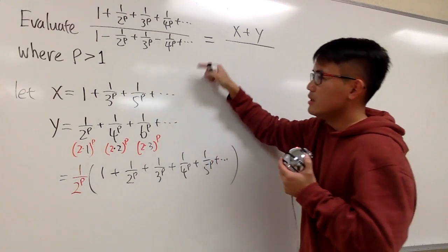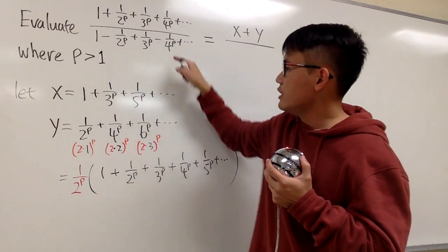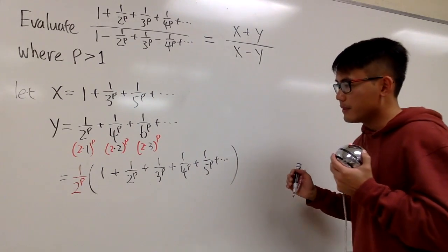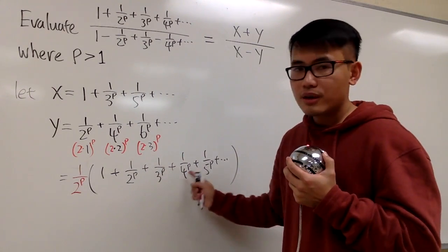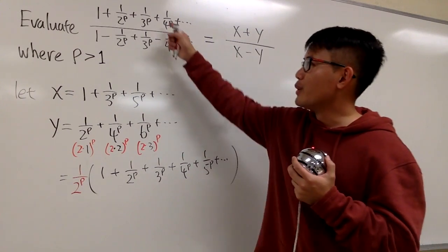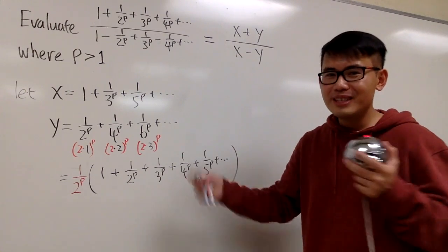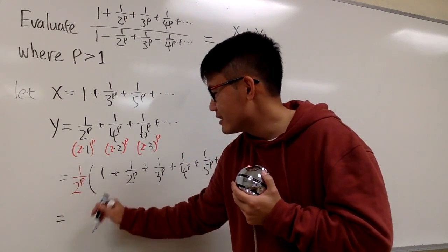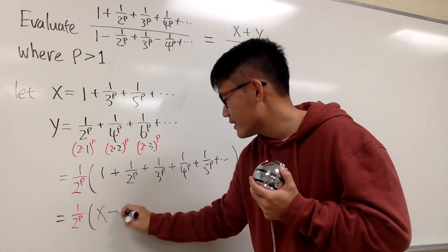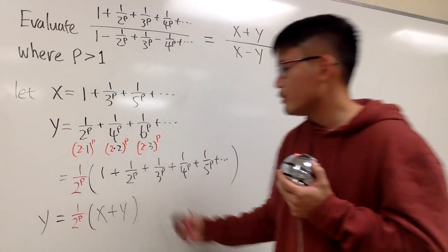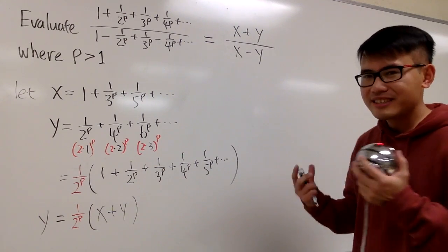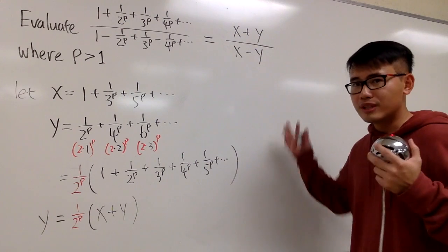On the bottom, it's all the odd terms minus all the even terms, so we have x minus y for the denominator. And as we just mentioned, y equals (1/2^p) times (x+y) — that bracketed expression is just the whole p-series, which equals x plus y. So I can write y equals 1 over 2 to the p times (x+y), and the left-hand side is still equal to y. Right now we are making some progress, and hopefully we can work something out so we don't have the variables x and y at the end.